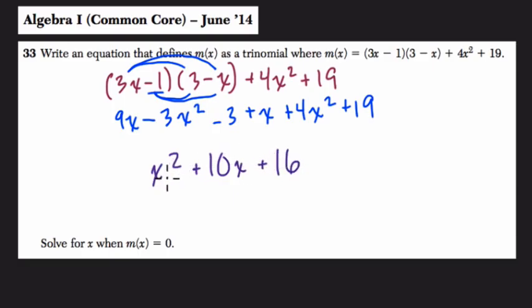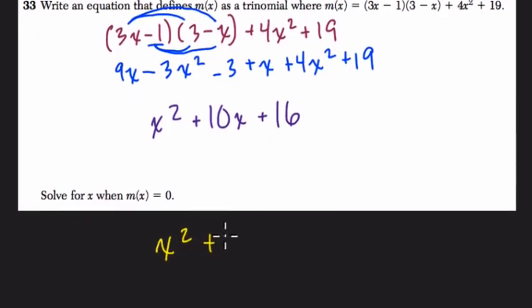All right, so we have this and we want to solve it when m(x) equals 0. So x² plus 10x plus 16 is going to equal 0. And here I forgot this equals m(x), so we're substituting 0 for m(x).